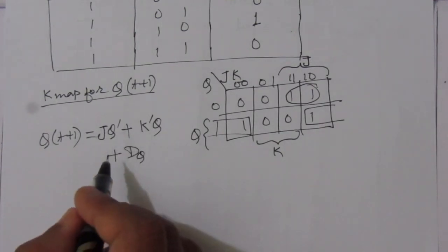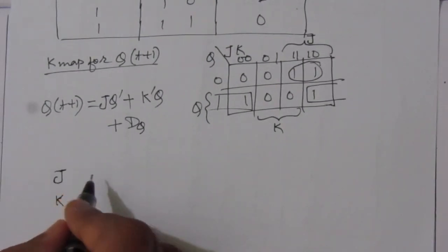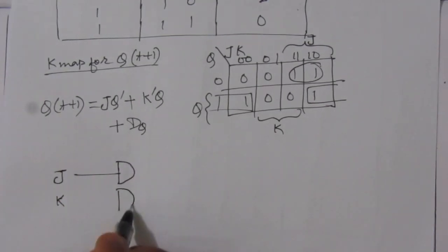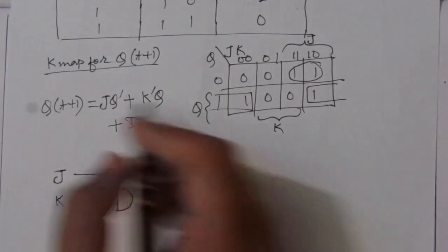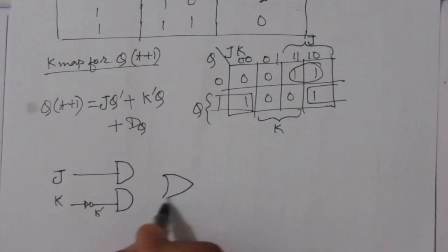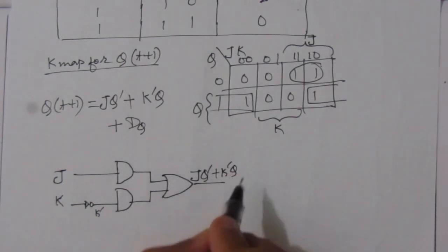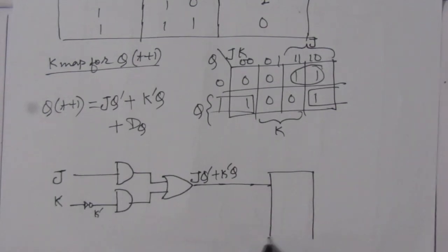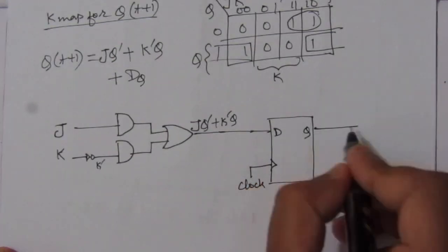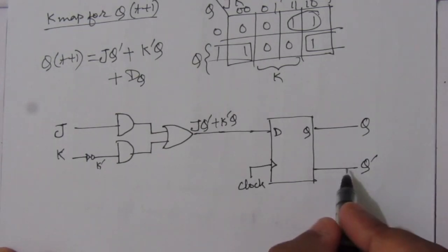To draw the circuit: we have J input and K input. J is applied to one AND gate; for the other AND gate we need K̄, so we use an inverter to get K complement. Then we use an OR gate to add the two terms, giving us J·Q̄ + K̄·Q. This output is applied to the input terminal of a D flip-flop.